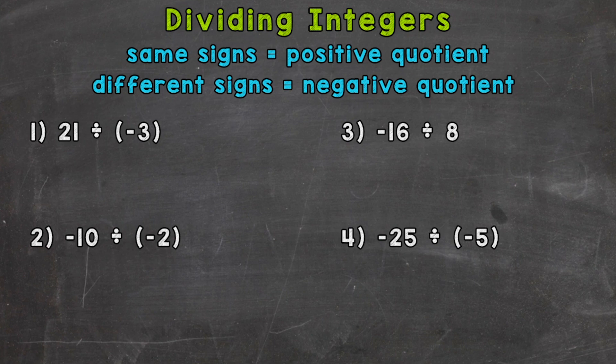If we have the same signs, so a positive divided by a positive or a negative divided by a negative, we will get a positive quotient. If you have different signs, so a positive divided by a negative or a negative divided by a positive, then we end up with a negative quotient.